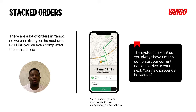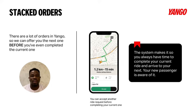We have a feature called chain orders that allows you to earn more. You don't have to wait at any given point in time to get a new request. This happens when you're on a current ride and you're a few minutes away from completing that ride — we can give you chain orders for you to complete.